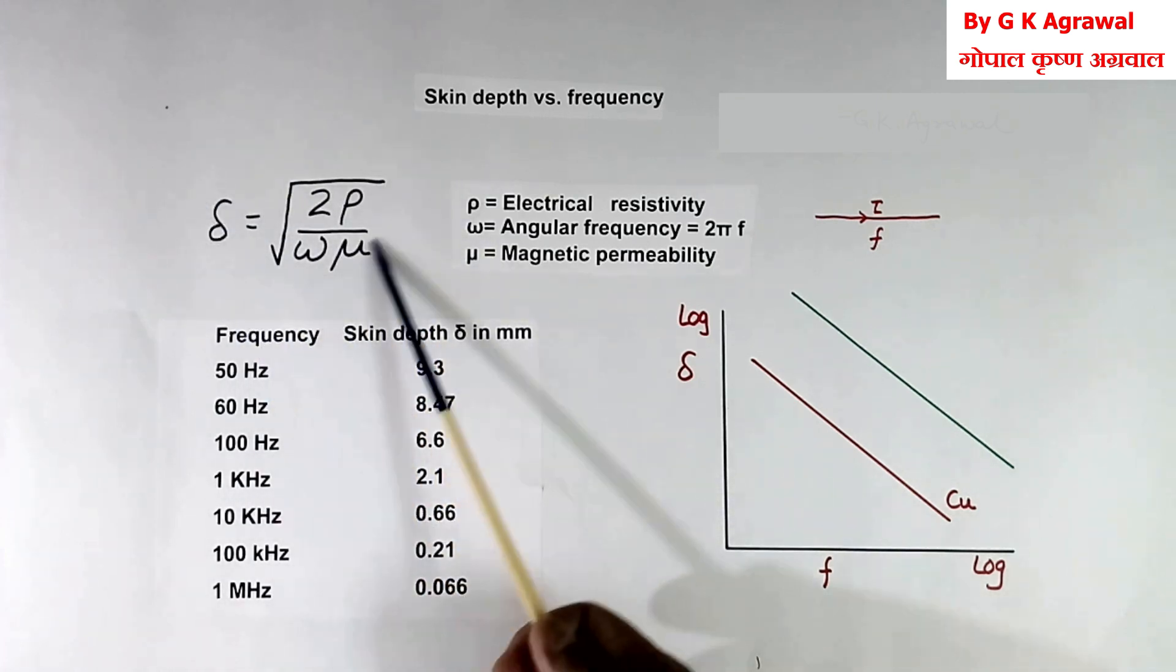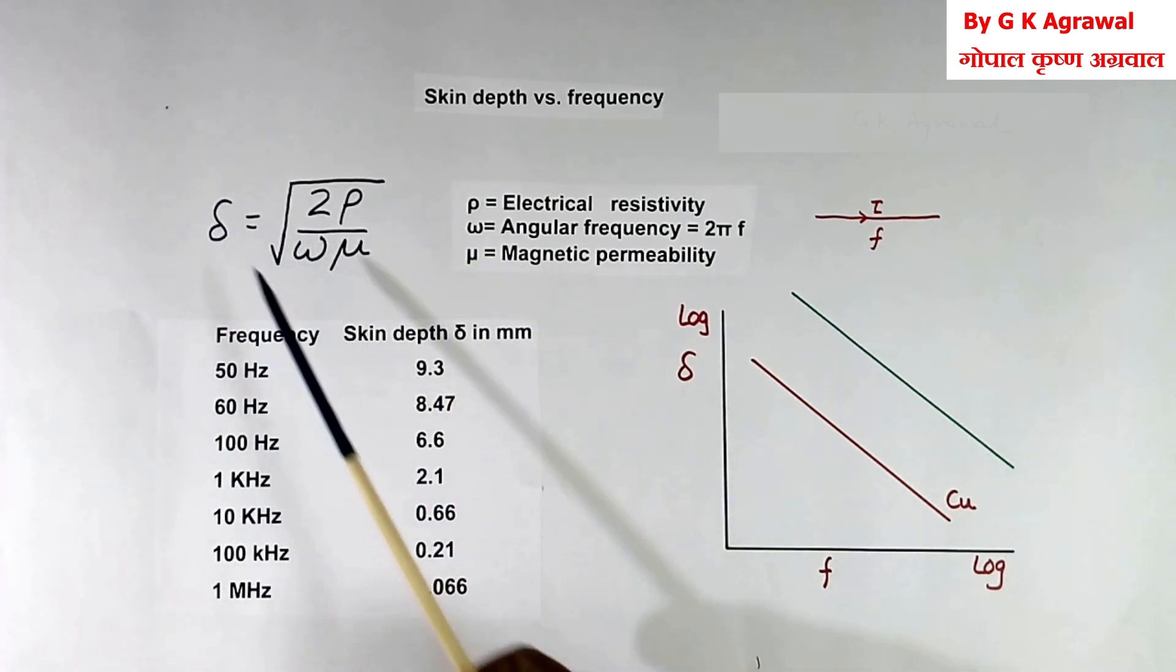If you calculate this, delta for various frequency value will come like this. You see at 50 Hz, this is 9.3 mm.